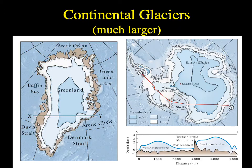Continental glaciers are the other type — much larger than mountain or alpine glaciers. They have some sort of continental landmass underneath but cover a very wide geographic area. Think of the Greenland ice sheet or the East and West Antarctic ice sheets. The Antarctic ice sheet varies significantly in thickness; the West Antarctic ice sheet is much thinner than the East Antarctic, and the two are separated by the Transantarctic Mountains.